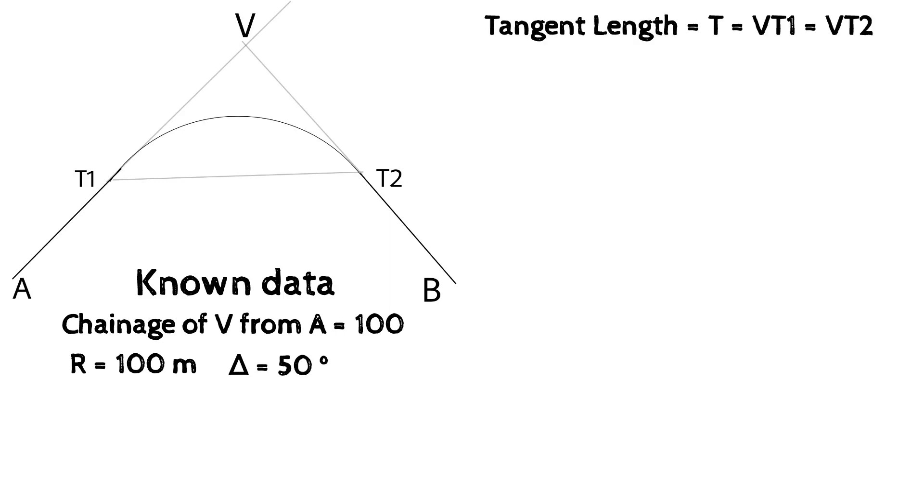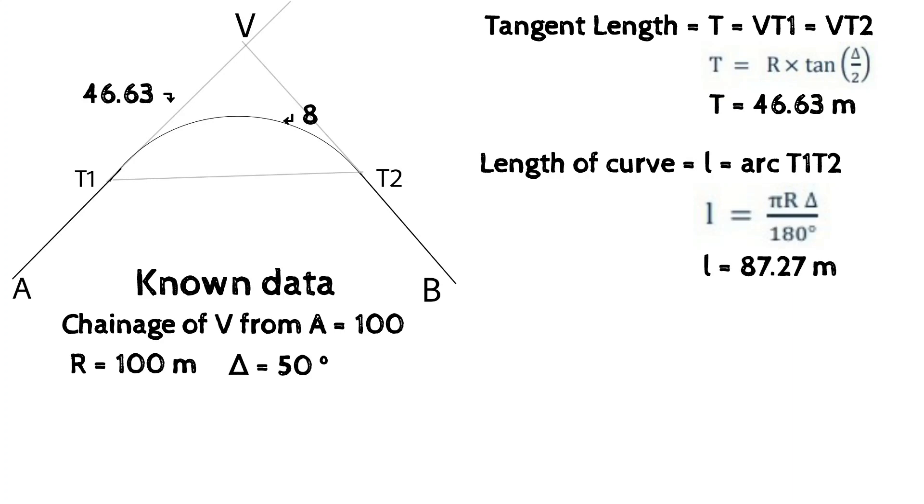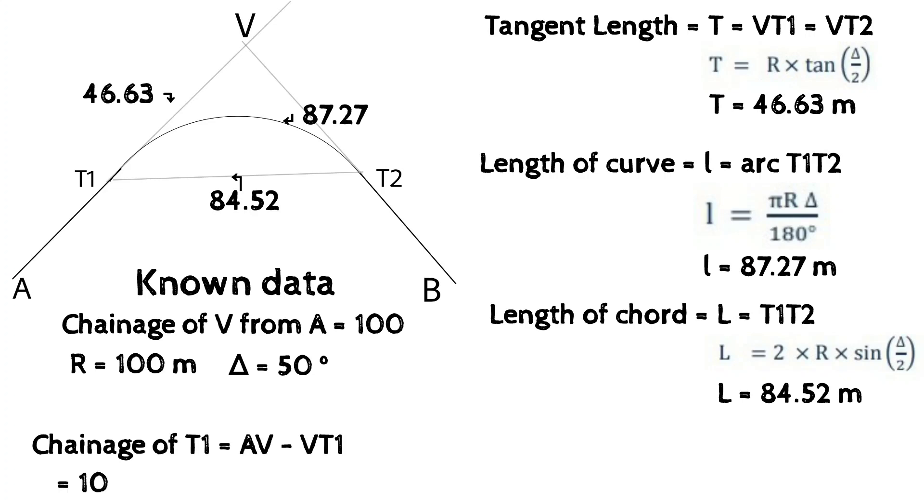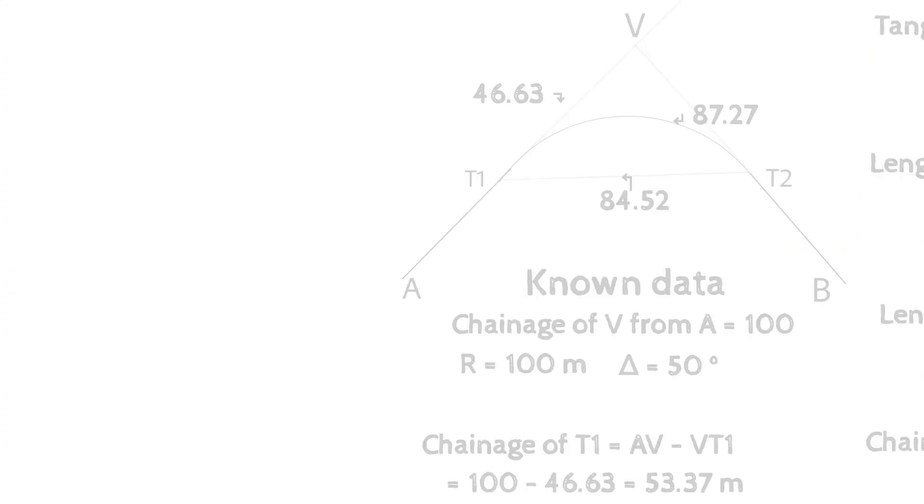We can calculate the tangent length T is 46.63 meter, length of curve is 87.27 meter, length of chord is 84.52 meter. We will also have chainage of T1 as 53.37 meter and chainage of T2 as 140.64 meter.